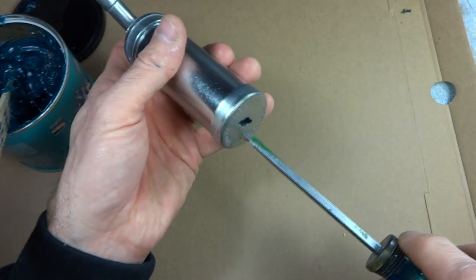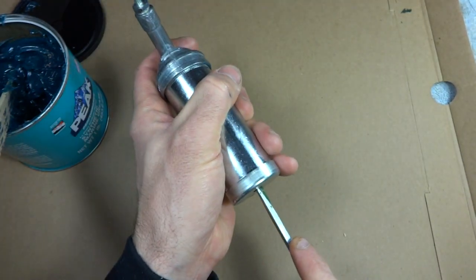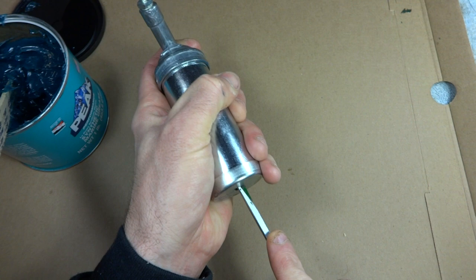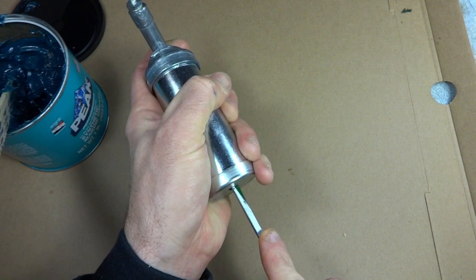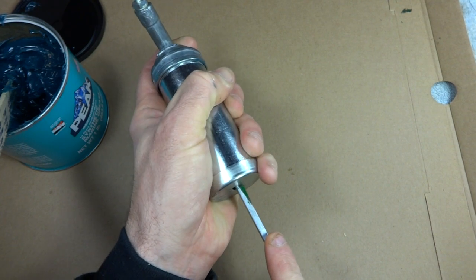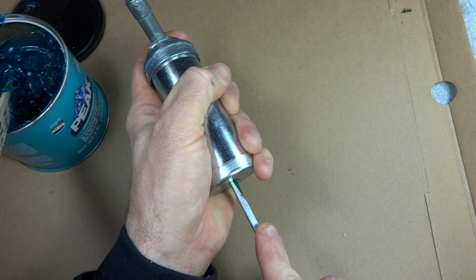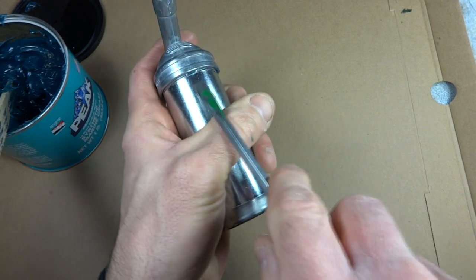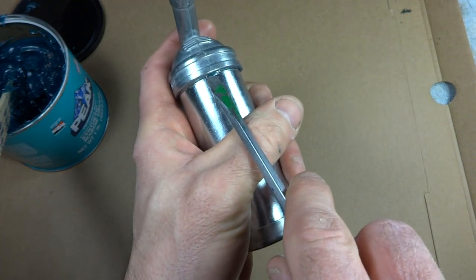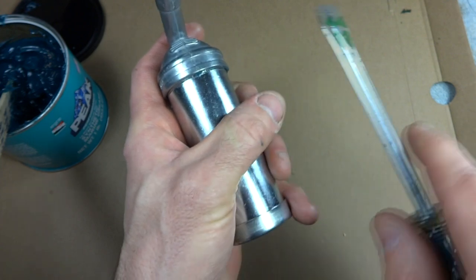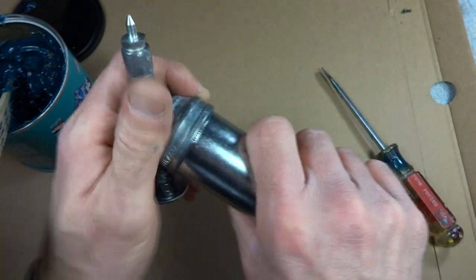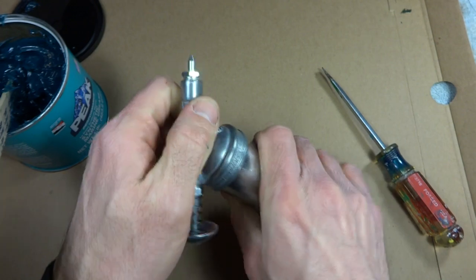Now take the screwdriver and you're going to push this up from the bottom and try to hopefully get some of the air out. And then when grease starts coming out from that little slot there, then you're done. Go ahead and tighten this down like that.